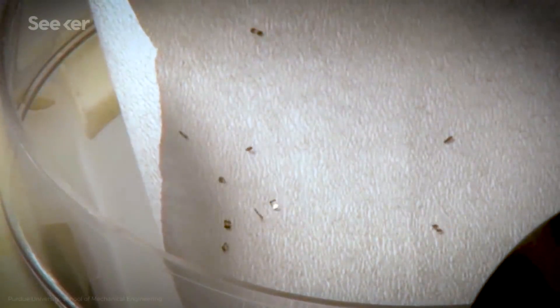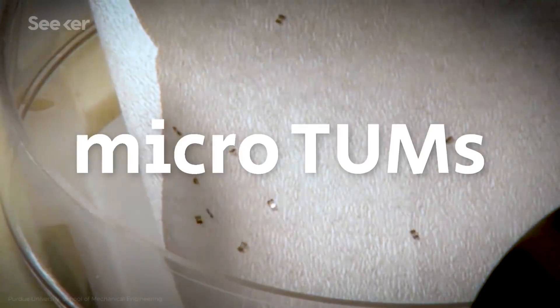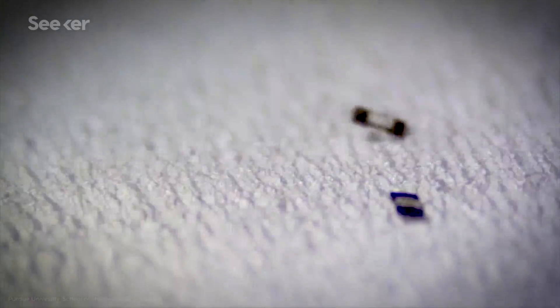Let's introduce Microscale Magnetic Tumbling Robots, or Microtums. These 4 to 800 micron long tiny bots are designed to deliver a specific drug to a specific place in your body.